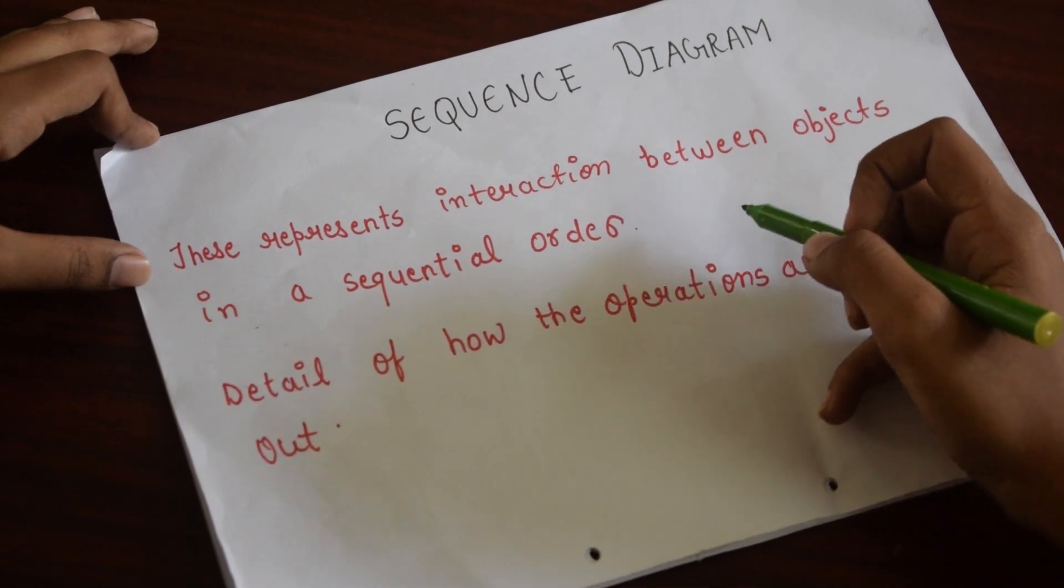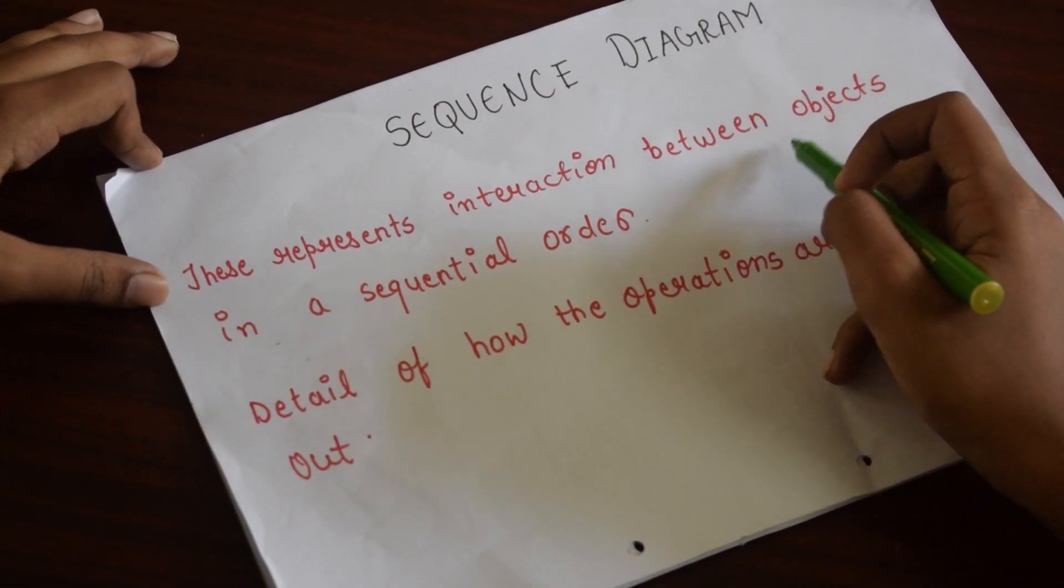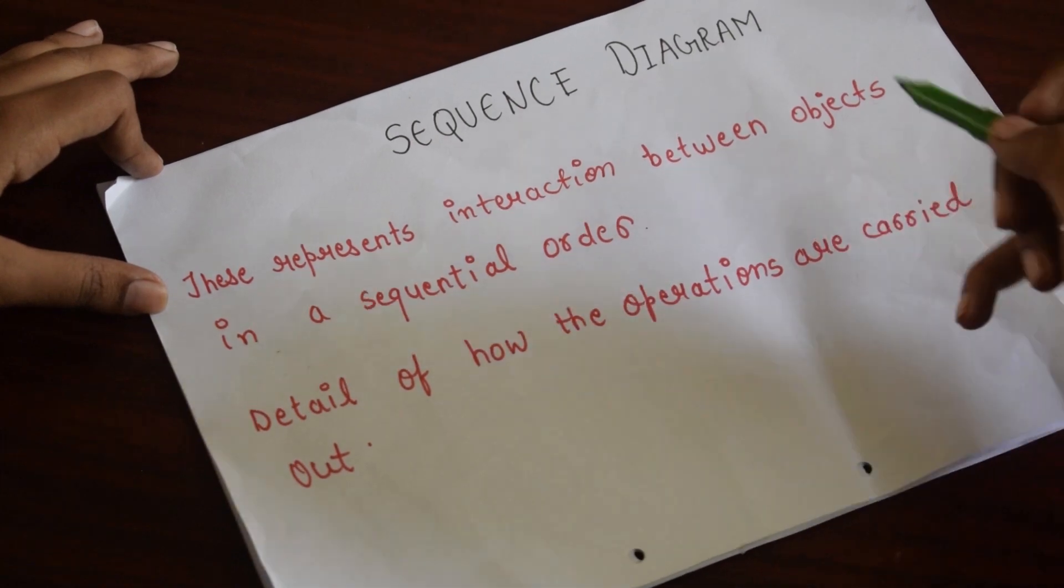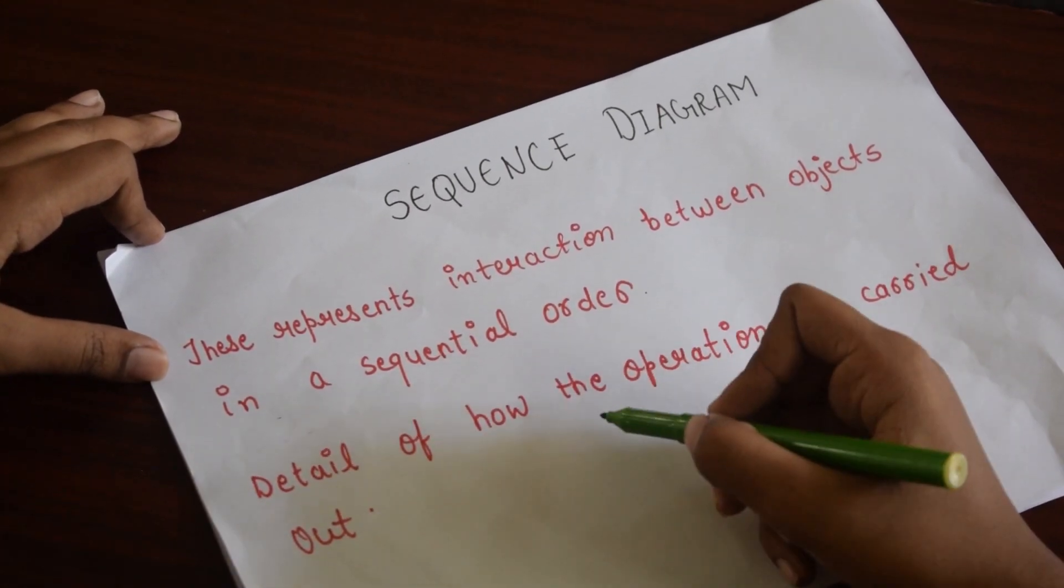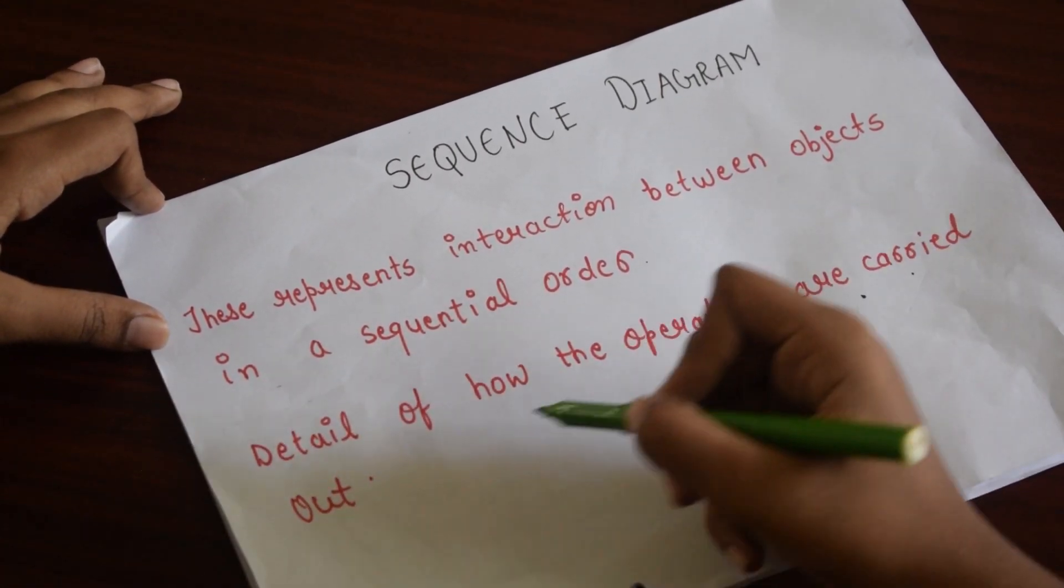Sequence Diagrams are diagrams that represent interaction between objects in a sequential order. Or, in a simple language, it gives us the detail of how the operations are to be carried out.